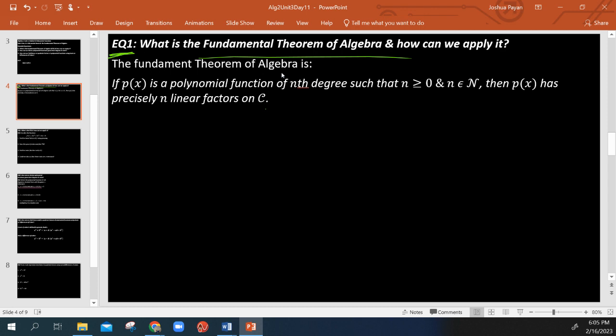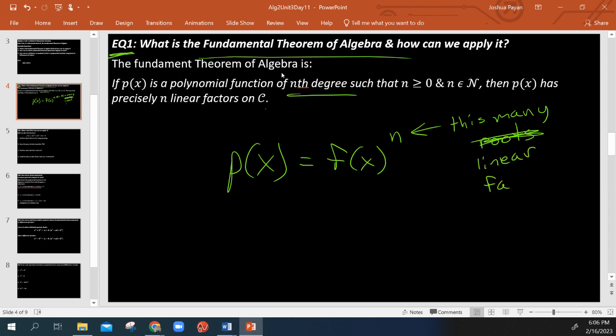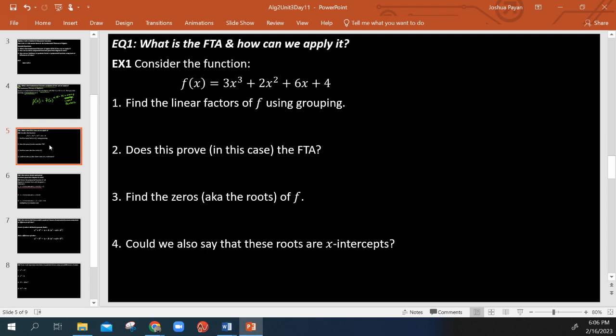All it really says is if we have a polynomial function of x to the nth degree, it's basically going to have that many linear factors, which ultimately means we're going to have that same amount of roots or x-intercepts or zeros, whatever you want to call them.